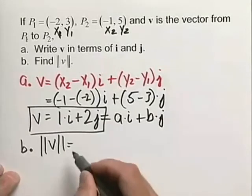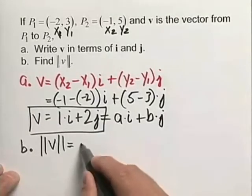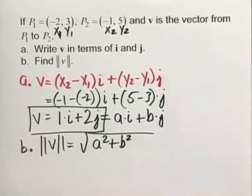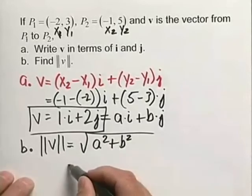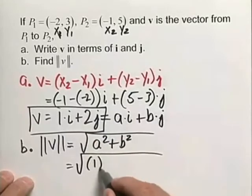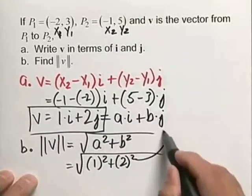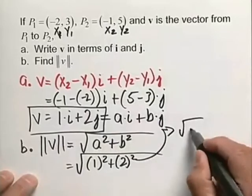And to find the magnitude, we have a nice little formula that says the square root of a squared plus b squared will give us our magnitude. So let's go ahead and do that here. We have the square root of a, which was one squared, plus b, which is two squared. And so from this, we'll have the square root of five.